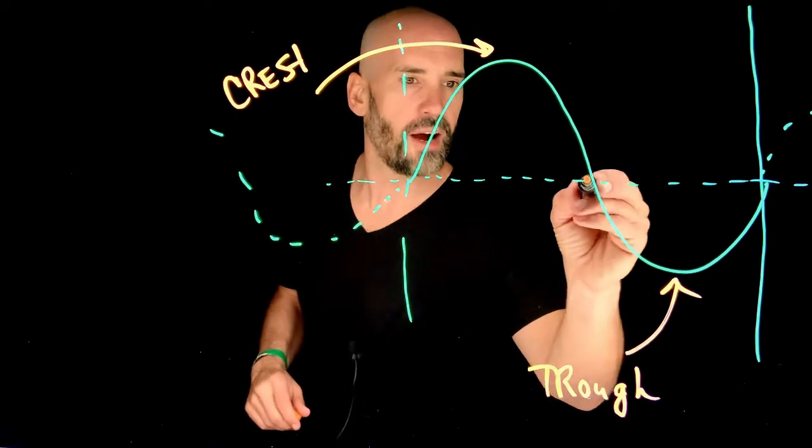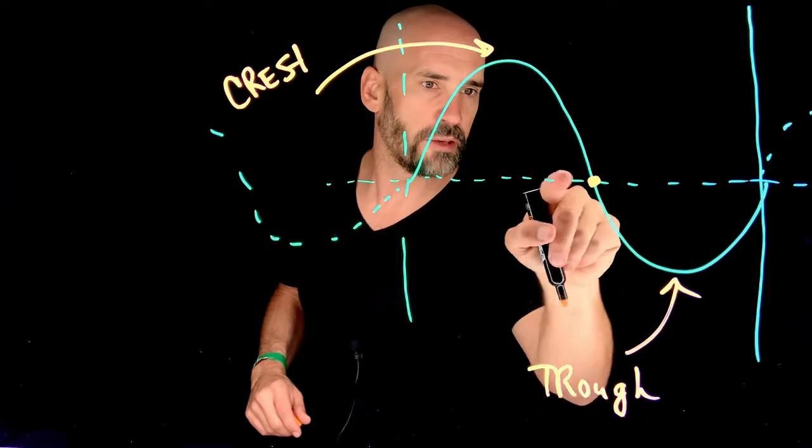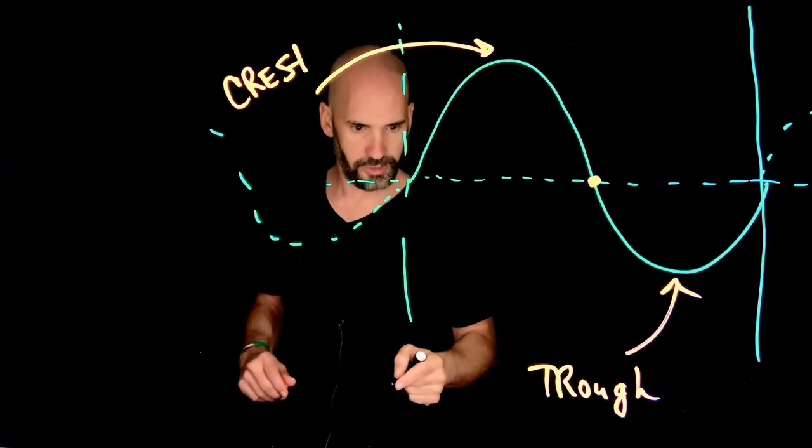Nodes are these points here where the wave is right on the equilibrium position. This little equilibrium line.